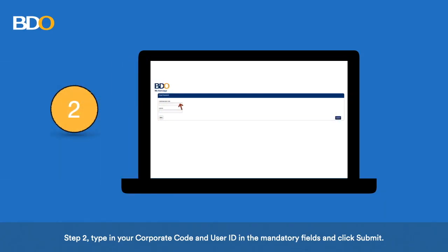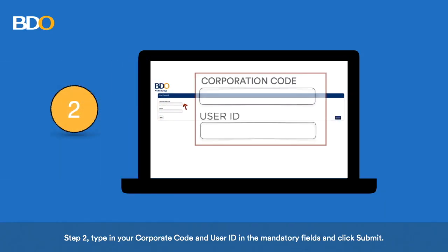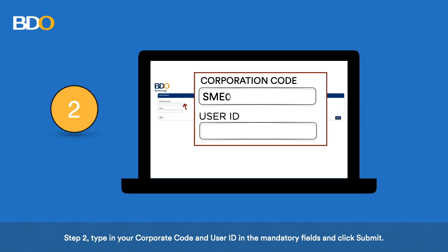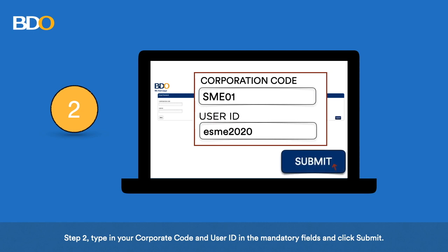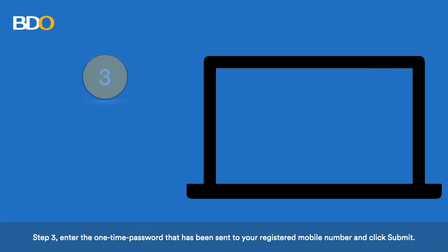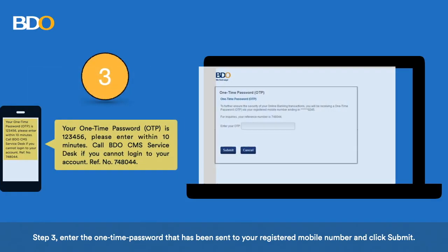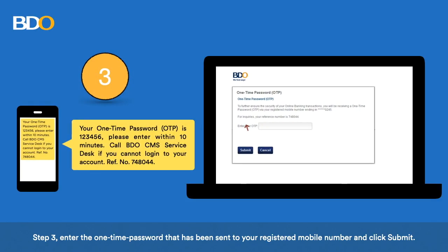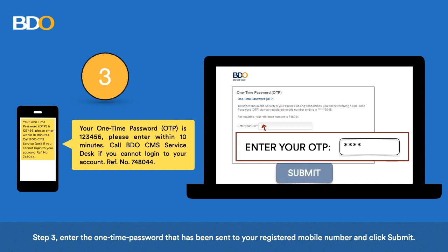Type in your corporate code and user ID in the mandatory fields and click Submit. Step 3. Enter the one-time password that has been sent to your registered mobile number and click Submit.